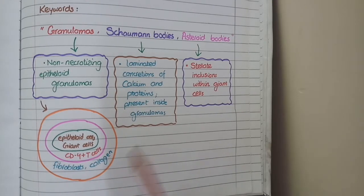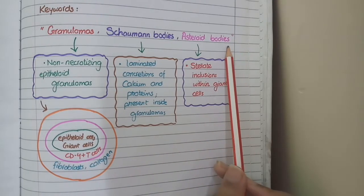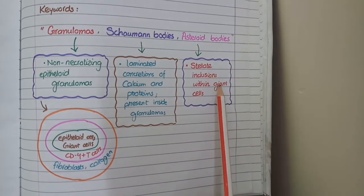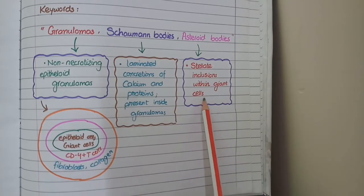The third element is asteroid bodies, which are star-shaped inclusion particles present in the cytoplasm of giant cells.